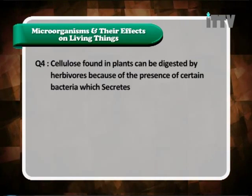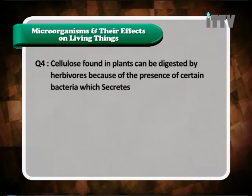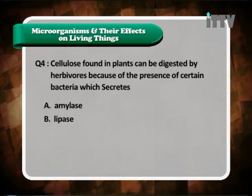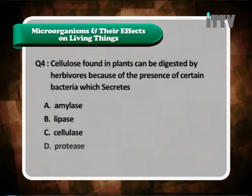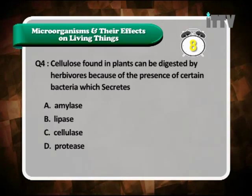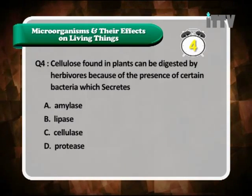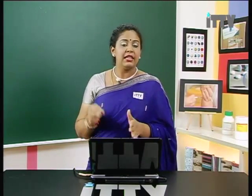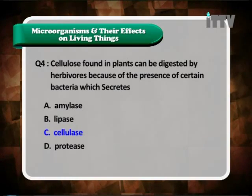Question 4: Cellulose found in plants can be digested by herbivores because of the presence of certain bacteria which secretes — A. Amylase, B. Lipase, C. Cellulase, D. Protease. Cellulose is present in the plant and consumed by herbivores. The bacteria in the stomach secretes an enzyme that changes cellulose into a simple sugar like glucose. The answer is C — Cellulase.